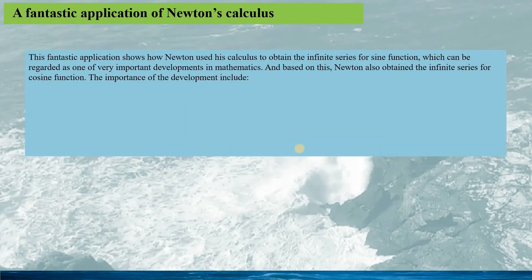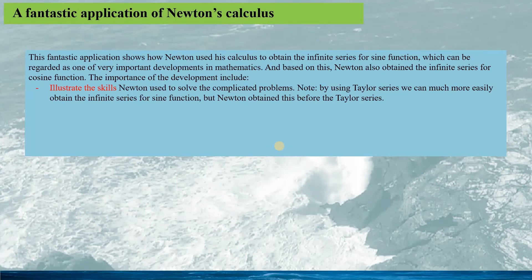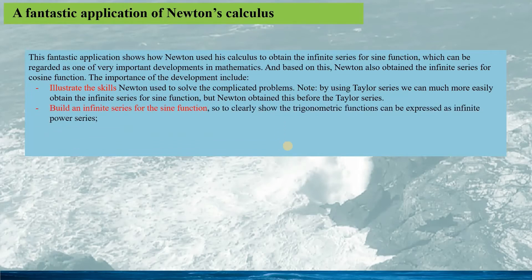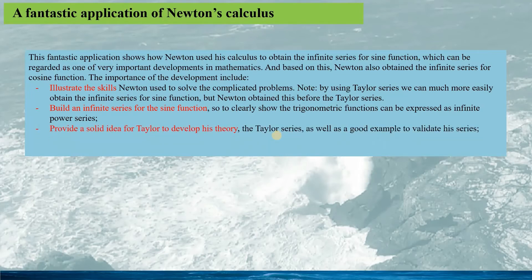This fantastic application shows how Newton used his calculus to obtain the infinite series for the sine function, which can be regarded as one of the very important developments in mathematics. From this, Newton also obtained the infinite series for the cosine function. The importance of this specific development includes the illustration of the skill Newton used to solve the complicated problem, since in Newton's time Taylor series was not invented yet, and the establishment of an infinite series for the sine function. This clearly shows that trigonometric functions can be expressed as infinite power series, providing a solid idea for Taylor to develop his theory.